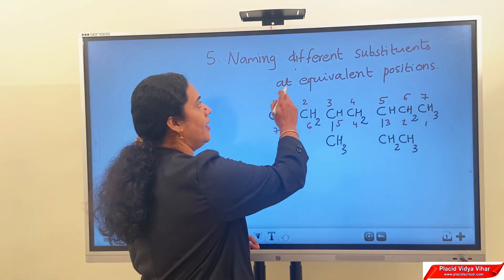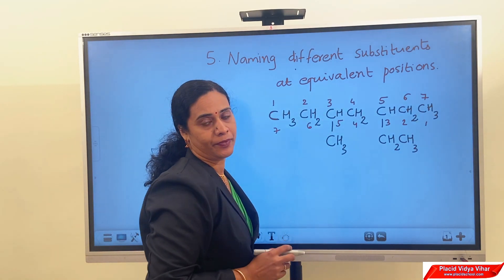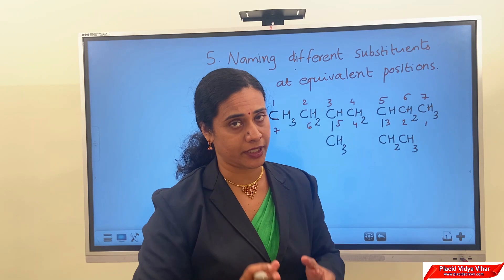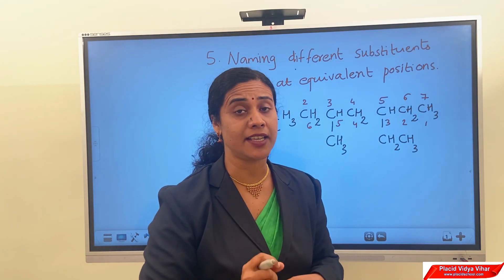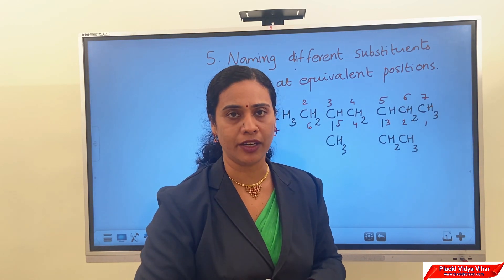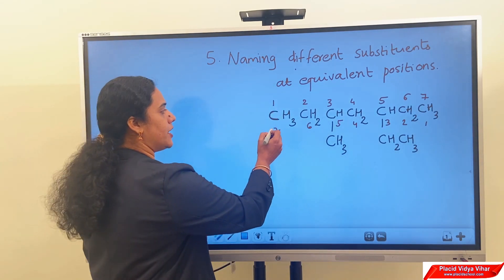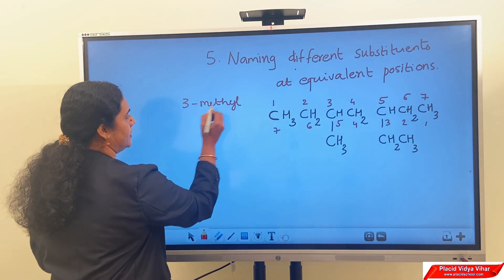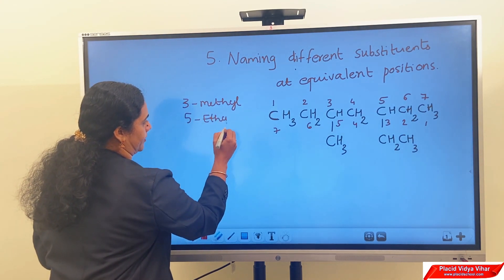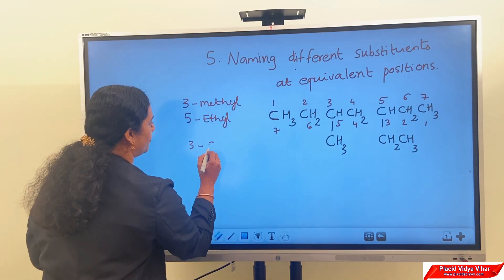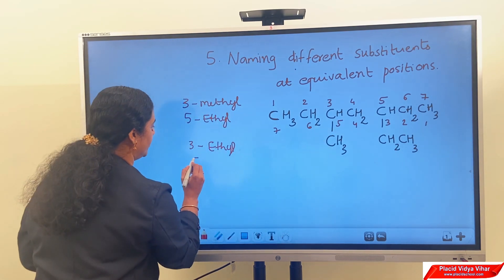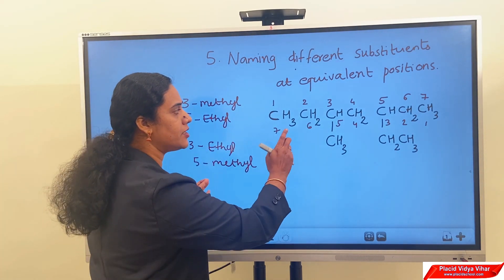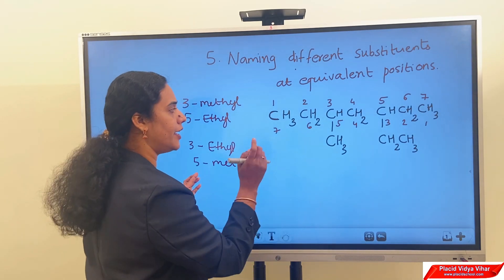Next, rule number 5: naming different substituents at equivalent positions. If two different substituents or side chains are at equivalent positions from the two ends of the chain, then numbering of the chain is done in such a way that the group which comes first in alphabetic order gets the lower number. For example, if you start numbering from one end, methyl group is present at the third carbon and ethyl group at the fifth position. If you start from the other side, ethyl group is at the third position and methyl group at the fifth position — two different substituents attached at equivalent positions.